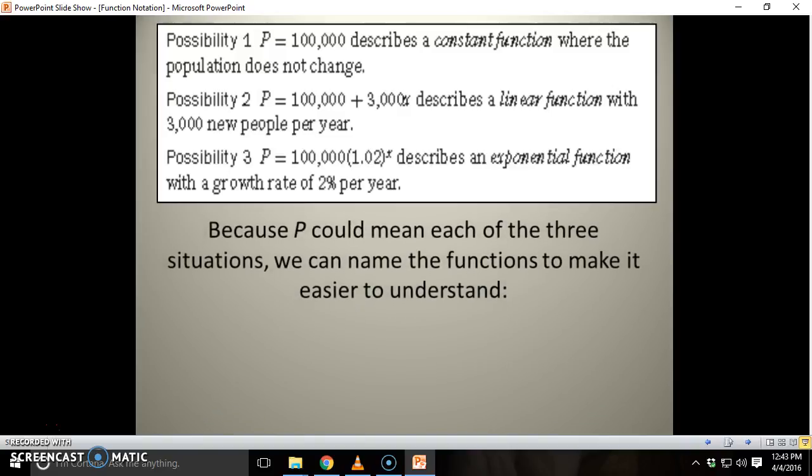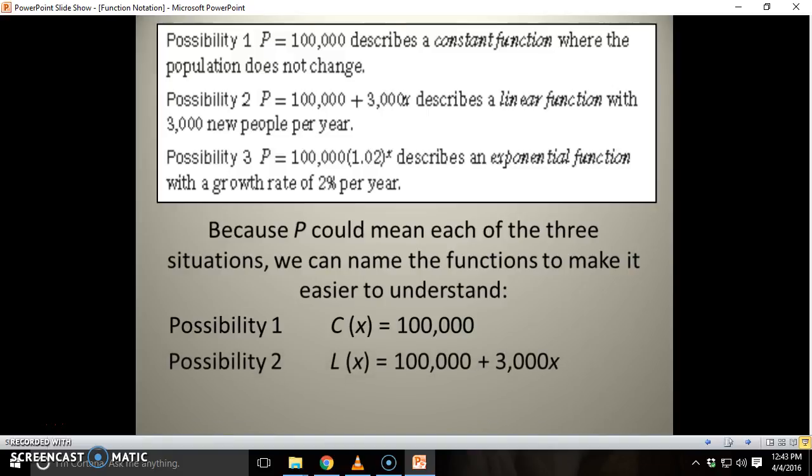So because P could mean each of the three situations, we could name the functions to make it easier to understand. So possibility 1, instead of using P, we're going to use C(x), C for constant. For possibility 2, we're going to use L(x) for linear. Possibility 3, we're going to use E(x) for exponential.